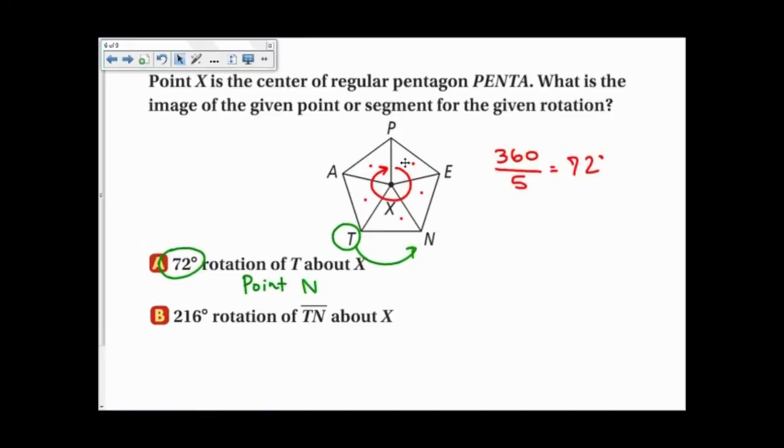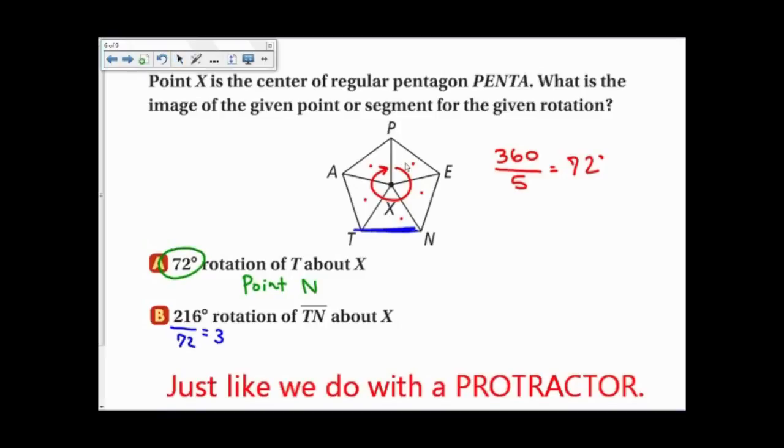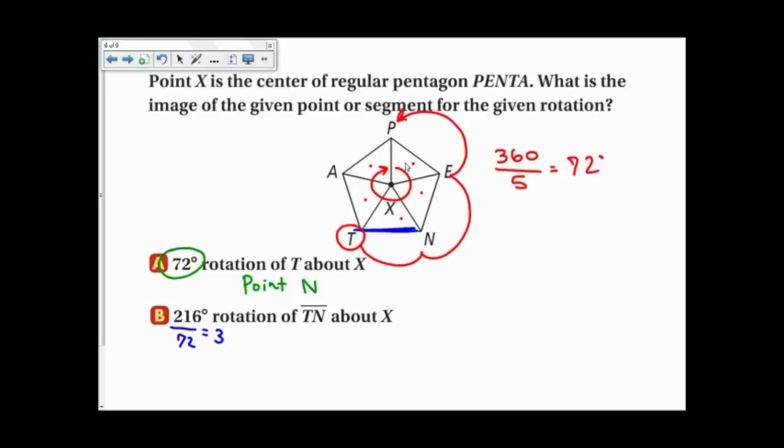Next, a 216 degree rotation. Now, that's going to be, if I divide this by 72, I get 3. So it must be 3 letters over, because 72 times 3 will be 216. Now the way I'm going to rotate segment TN is simply by moving both endpoints, just like we do with a compass. So if I start with T and go 3 letters over, 1, 2, 3, I'm at point P. If I move point N, 3 letters, 1, 2, 3, I'm at point A. So the segment, the image of a rotation of segment TN about X will be PA.